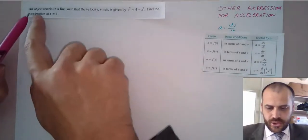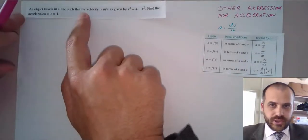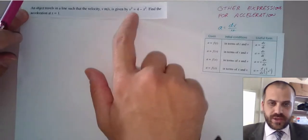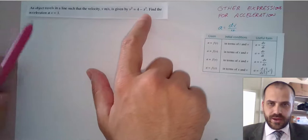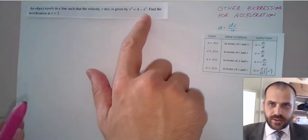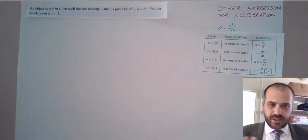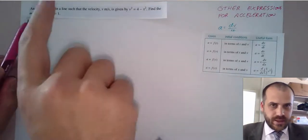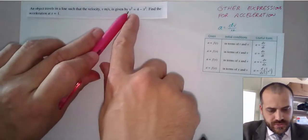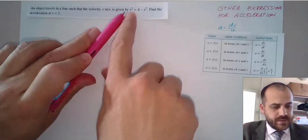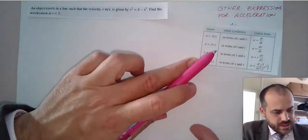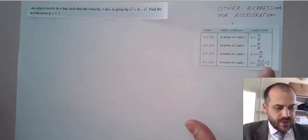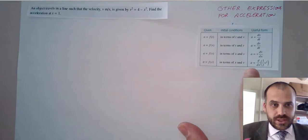Let's look at this first question. An object travels in a line such that the velocity in meters per second is given by v squared equals 4 minus x squared. Find the acceleration at x equals 1. So we need some sort of acceleration function. Our initial function is given in terms of v squared, and looking at our useful forms, we can see there's one where if we've got velocity squared we can find a function for acceleration.